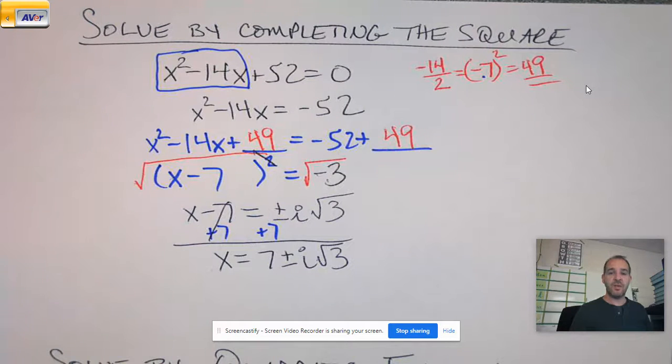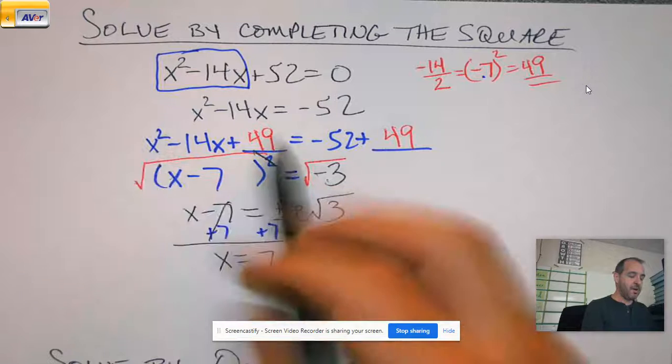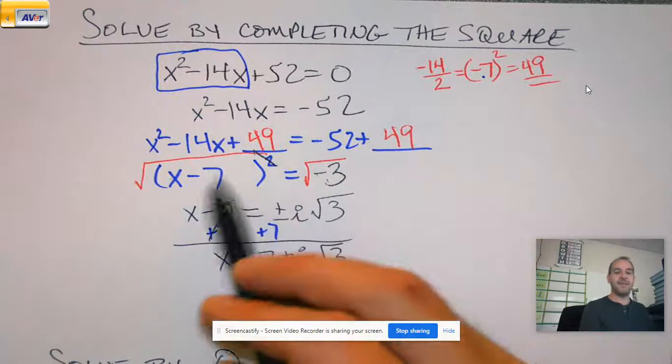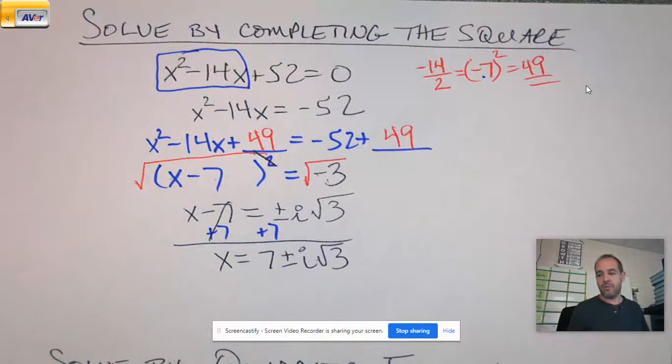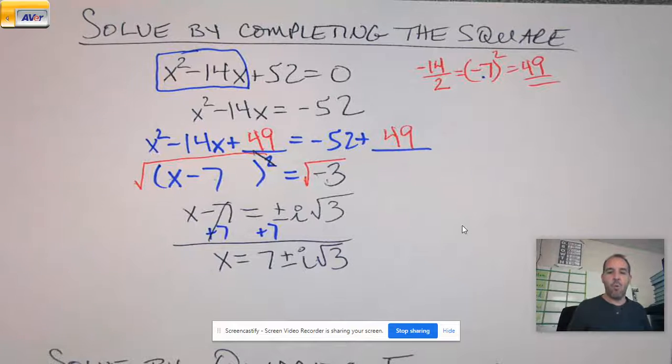So really, the only difference between this and when we solved by roots was we have that extra step in here that we've got to do to get to the actual binomial square. All right, three down, one to go.